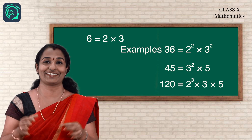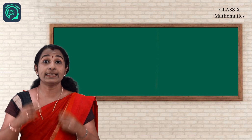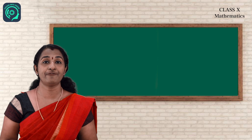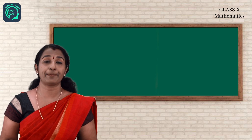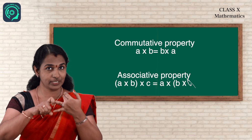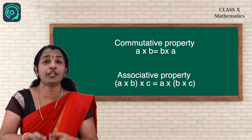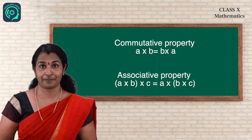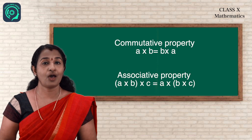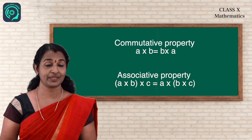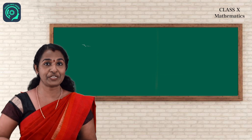Now let us consider the third part: apart from the order in which the prime factors occur. We have already learnt about the commutative property and associative property — even if we change the order of numbers, the result doesn't change. So 6 can be written as 2 into 3, or as 3 into 2 — both are the same.